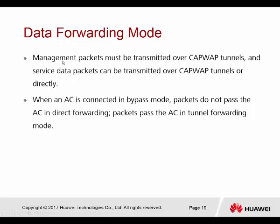Management packets must always be transmitted over the CAPWAP tunnel. Service data packets can be transmitted over the CAPWAP tunnel or directly. So all management packets used by the AP or controller must use the CAPWAP tunnel, but user data service packets can either use the CAPWAP tunnel or go directly. When an AC is connected in bypass mode, packets do not pass through the AC in direct forwarding, but packets do pass through the AC in tunnel forwarding mode.